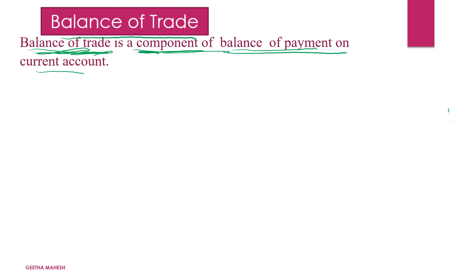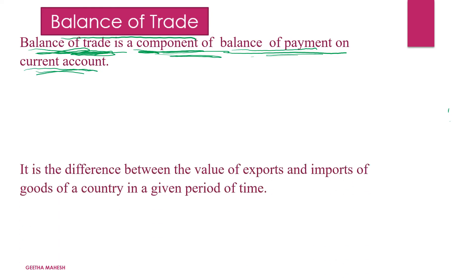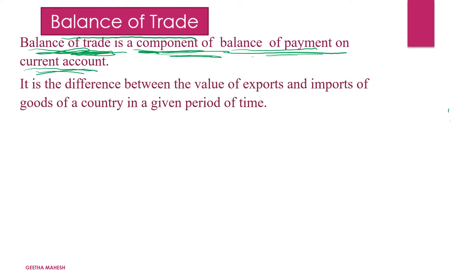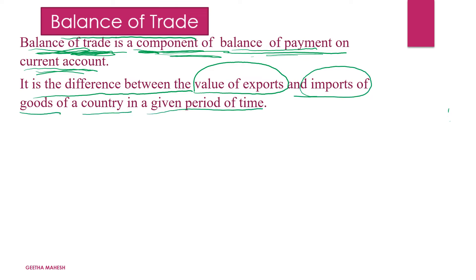Balance of trade is a component of balance of payment under the current account. Balance of trade is the difference between the value of exports and imports of goods of a country in a given period of time. It is calculated as value of export of goods minus value of import of goods. It is also known as the balance of visible trade or trade in goods.